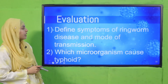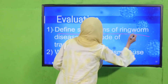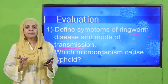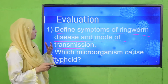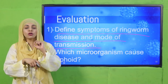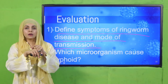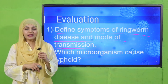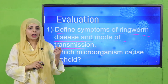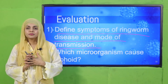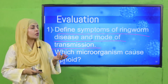Now we move to the evaluation. Define the symptoms of ringworm disease and its mode of transmission. Ringworm is caused by fungi; the symptoms are small ring-formed spots on the skin that are itchy and scaly, caused by fungi. Which microorganism causes typhoid? It is caused by bacteria.